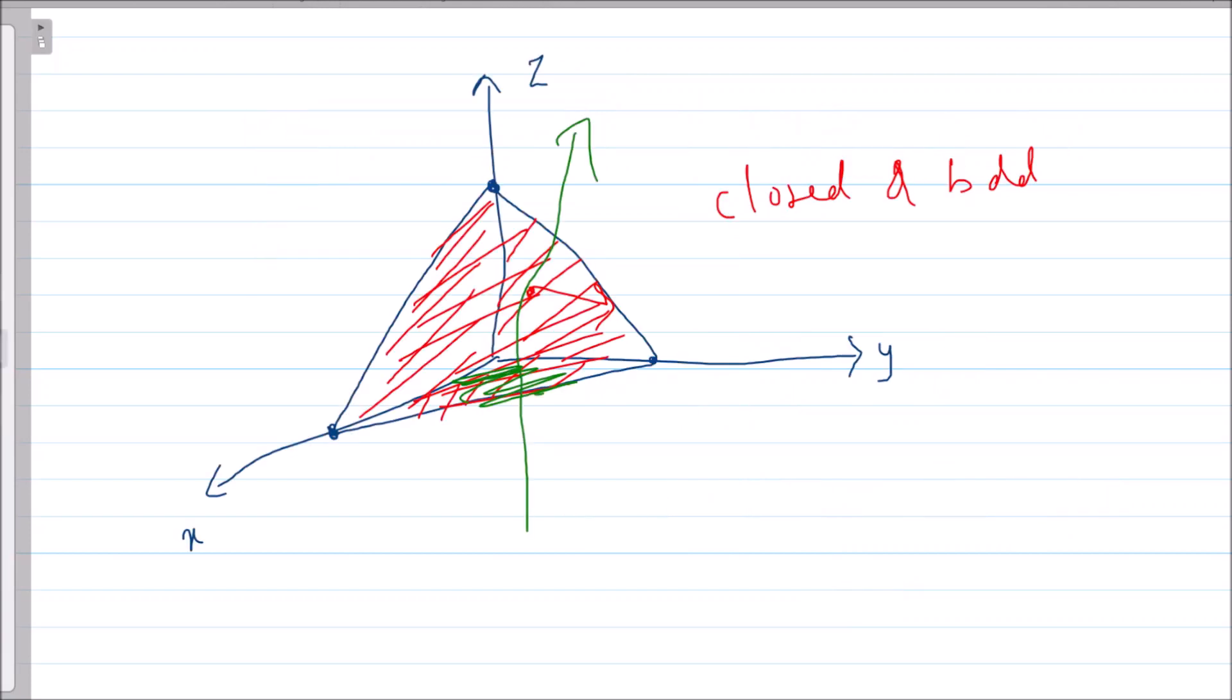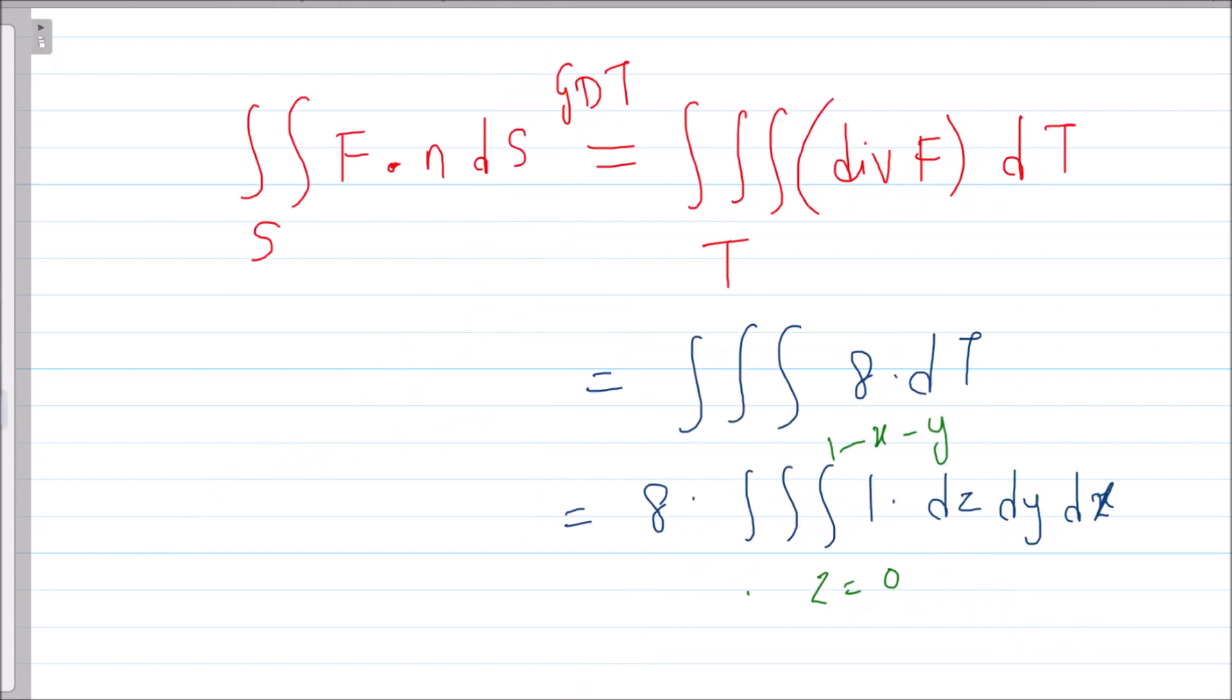When you project this on the xy plane, what you get is a triangle 1 and 1, 0. What are the limits of y axis? You draw the line parallel to y axis. From where is it entering? From y equal to 0, and what is this line? x plus y equal to 1. So the limits of y are 0 to 1 minus x, and the limits of x are 0 to 1.